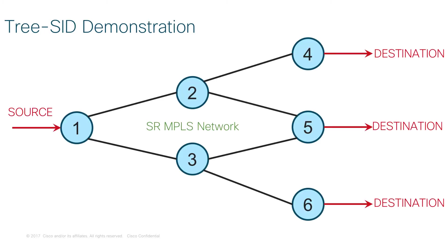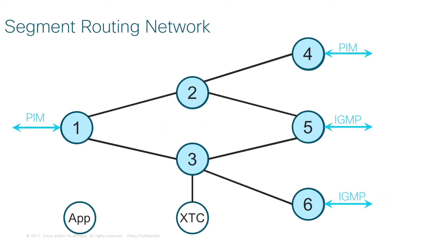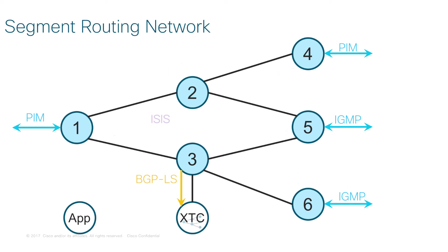Let's take a look at how Treesit works. We have a Segment Routing Network. Under that network, we can connect multicast senders and multicast receivers using legacy multicast protocols like PIM and IGMP. In the SR Network, all topology information is exchanged among routers using an IGP protocol, which will be ISIS in our case. This ensures each router has full topology visibility. We need to provide that topology information to the controller. The controller, in our case, will be XTC. We are using BGP link state protocol address family to give a full topological view to the controller.